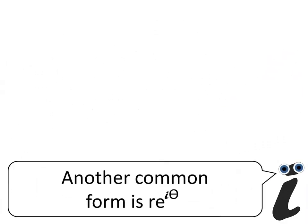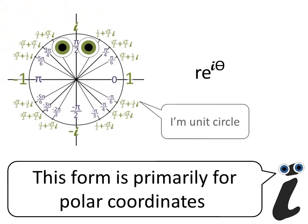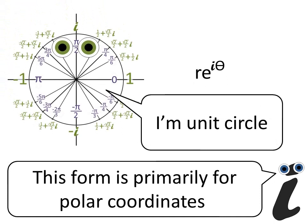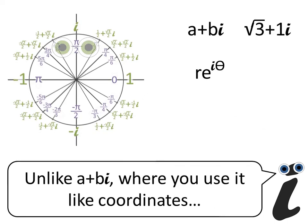Another common form is r e to the i theta. This form is primarily for polar coordinates. I'm unit circle. And the unit circle is important, because it relates to i, unlike a plus bi, where you use it like coordinates.